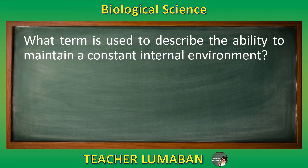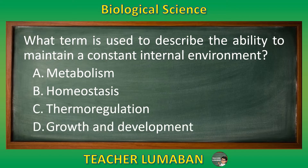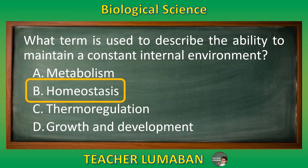What term is used to describe the ability to maintain a constant internal environment? Letter A: Metabolism. Letter B: Homeostasis. Letter C: Thermoregulation. Letter D: Growth and Development. The correct answer is letter B — homeostasis. The term used to describe the ability to maintain a constant internal environment is called homeostasis.